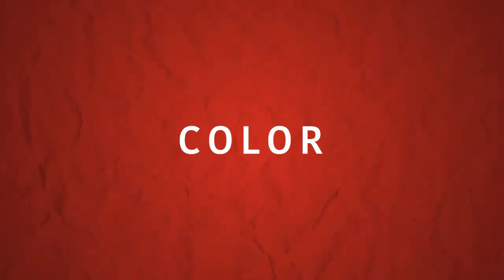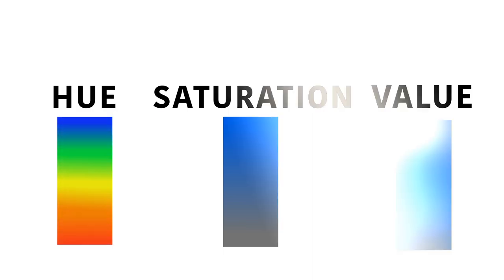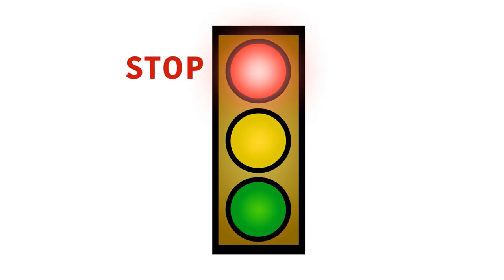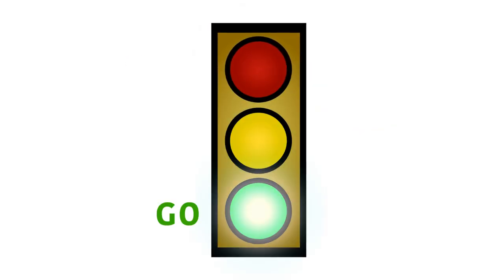The three characteristics of the colors used in a composition are hue, saturation, and value. Different colors and characteristics carry different meanings.